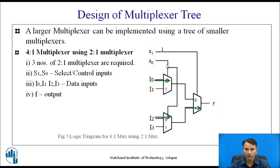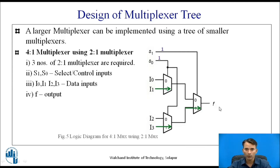When S1 and S0 are both 1: because S0 is 1, i1 and i3 get selected. As S1 is 1, the second input of the third 2-to-1 multiplexer gets selected, so i3 is connected to the output. In this way, the multiplexer tree works.